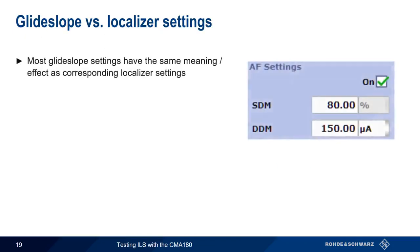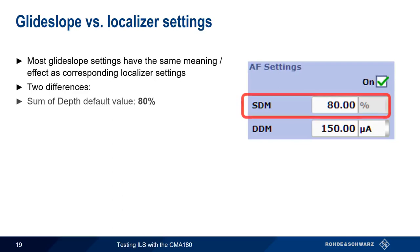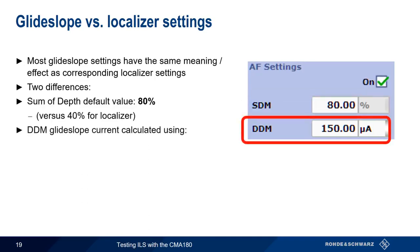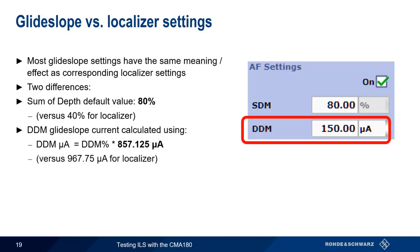Most glide slope settings on the CMA have the same meaning or effect as their localizer counterparts. There are, however, two differences to note. First, the default sum of depth of modulation for glide slope is 80%, different from the default value of 40% in localizer. Second, the DDM glide slope current is calculated using the scaling factor 857.125 microamps, whereas in localizer the scaling factor was 967.75 microamps.